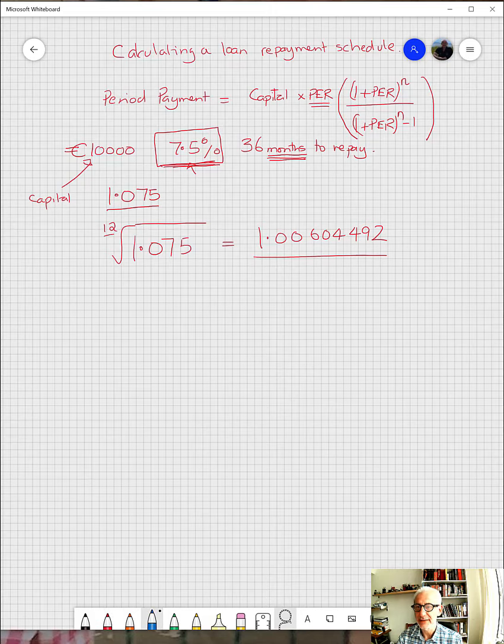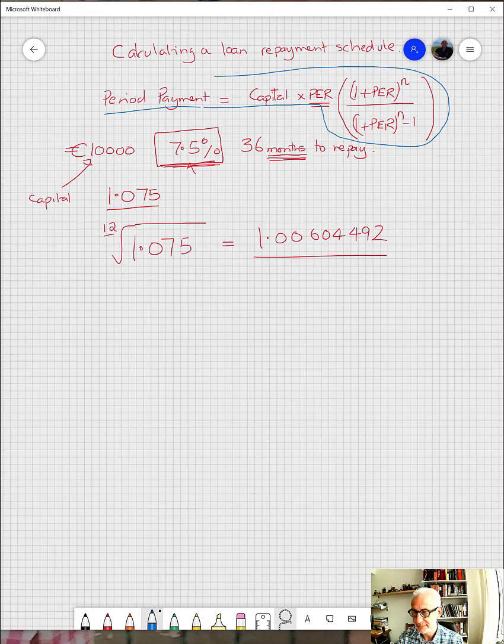Remember the formula is this thing up here—period payment, all of this stuff here. So our period payment, I'm just going to call it PP for short, is equal to the capital that we want to borrow: 10,000.